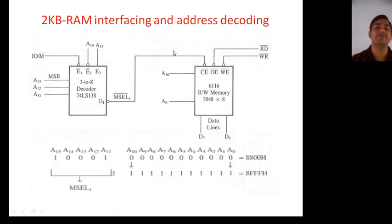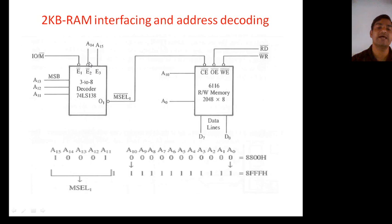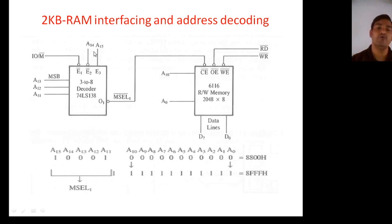Now, let's look at the RAM interface. This is a 2048-byte, meaning 2KB memory chip. 2KB means 2 to the power 11, so address lines are A0 to A10, which connect here. The remaining lines — A11, A12, A13 — connect to the decoder inputs, A14 connects to one enable line, and A15 connects to another. You can make it either active low or active high; suppose A15 is active high and A14 is active low. Since RAM supports both read and write operations, we give separate RD bar and WR bar signals as WE bar and OE bar. The output of the decoder connects to the chip enable CE bar of this memory. In case of memory read or memory write, IO/M bar must be 0, so I connect IO/M bar here.